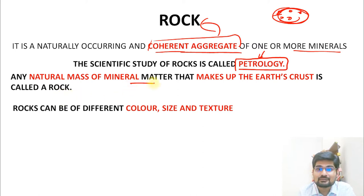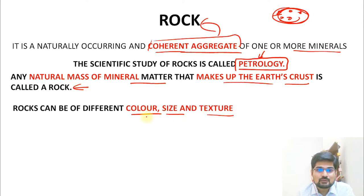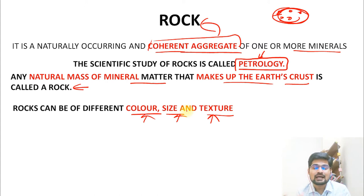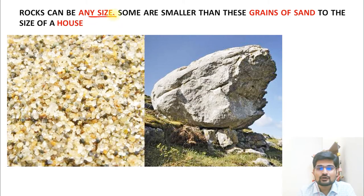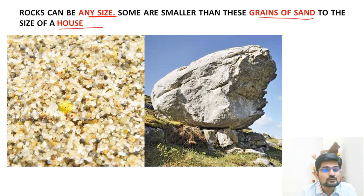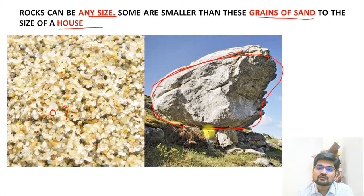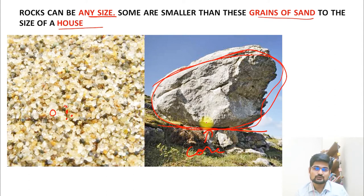Any natural mass of mineral matter that makes up the earth's crust is called a rock. Rocks can differ in color, size, and texture — these are the important characteristics by which we classify rocks. Rocks can be of any size, from smaller than grains of sand to the size of a house. Larger singular boulders placed on a flat plane are called core stones.